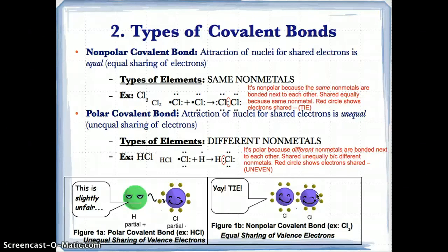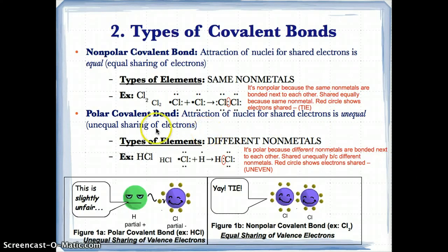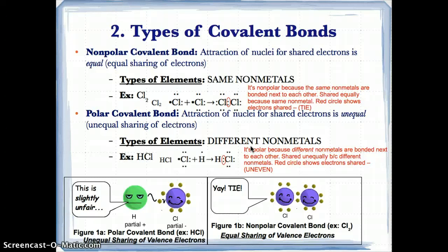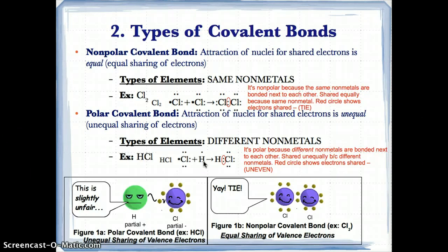Polar covalent bonds are bonds where two nonmetal atoms have unequal attraction for the electrons that are shared — the sharing is unequal. This is because two different nonmetals are involved. The result in the tug-of-war is uneven: one pulls more strongly than the other. An example of a polar covalent bond is HCl, where the H and Cl atoms have different pulling strength, leading to unequal sharing of electrons since H and Cl are different nonmetals.